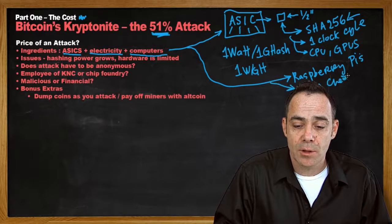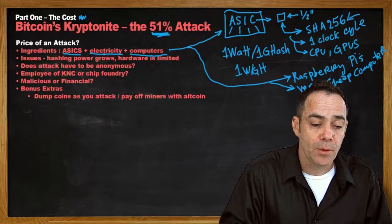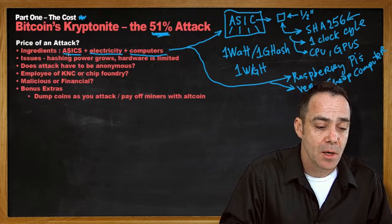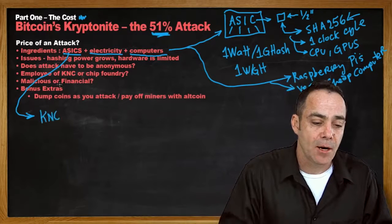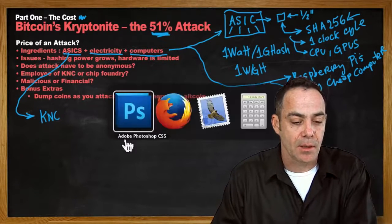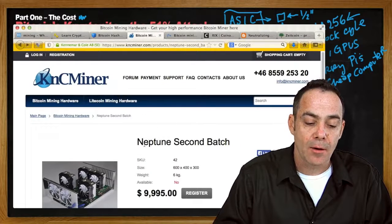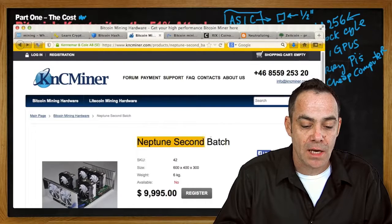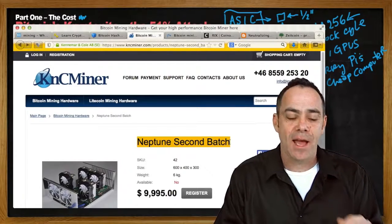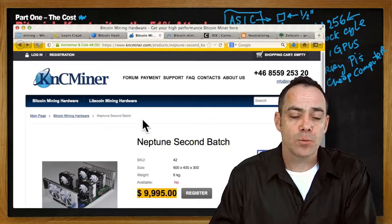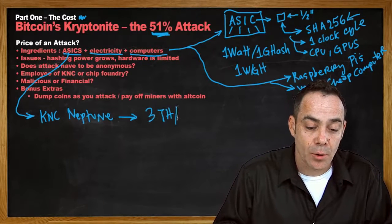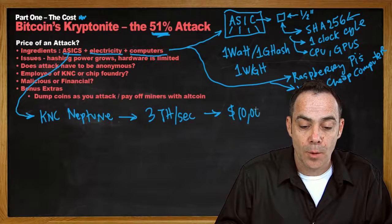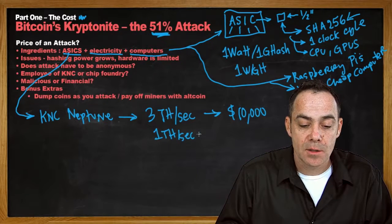Now that we have the ingredients, let us figure out how much these things cost. In terms of buying ASICs, there are a number of companies offering the fastest ones available. To get our baseline numbers we are going to look at KNC. Here at KNC miners' page, they are about to release the Neptune Second Batch, which is a 3 terahash miner for $10,000. So the KNC Neptune gives you 3 terahashes per second for $10,000 USD — that is 1 terahash per second for $3,333 USD.